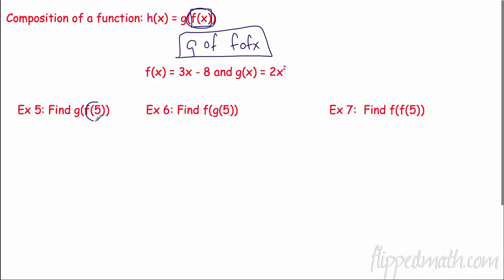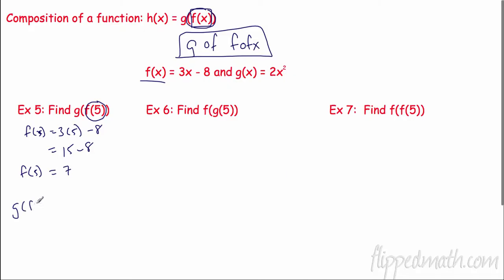So the first thing I'm going to do, before I get to g, I need to find out what is f of 5. Here's my f of x. So f of 5 is 3 times 5 minus 8. 3 times 5 is 15; 15 minus 8 is 7. So f of 5 is 7. Now wherever I see f of x I'm going to put 7 into my g. So g of f of 5 — wherever I see my x in this one, I'm going to put 7. 2 times 7 squared; 7 squared is 49, so that is 98. So g of f of 5 is 98.